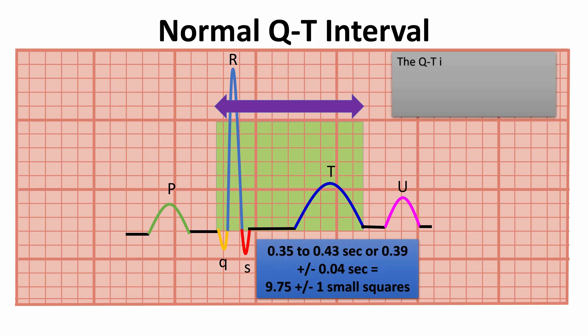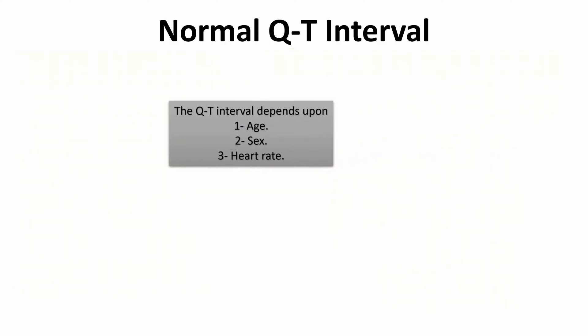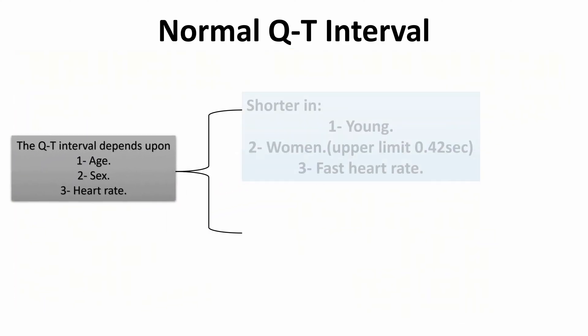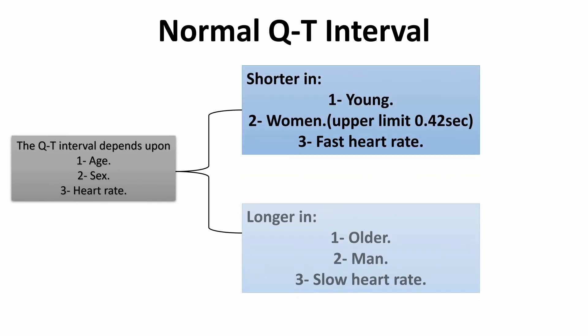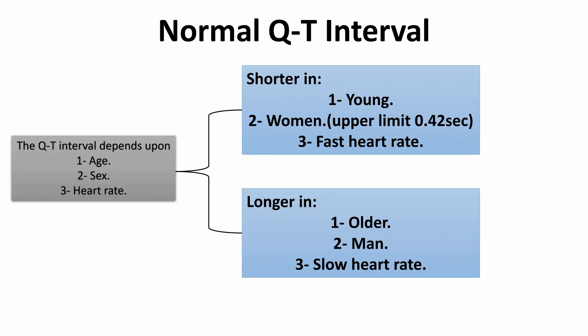The QT interval depends upon three variables: age, sex, and heart rate. The QT interval tends to be shorter in young individuals and longer in the elderly. It is normally slightly shorter in females, with the upper limit being 0.42 sec. The QT interval shortens at fast heart rates and lengthens at slow heart rates.